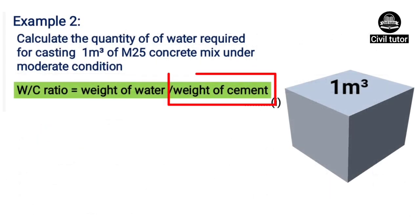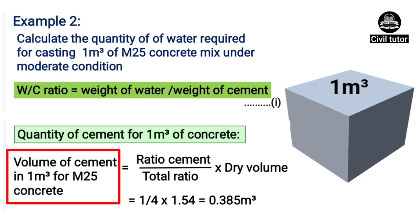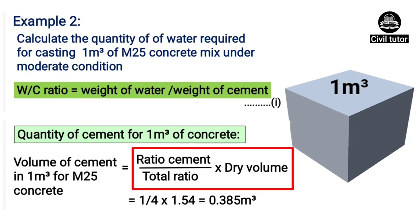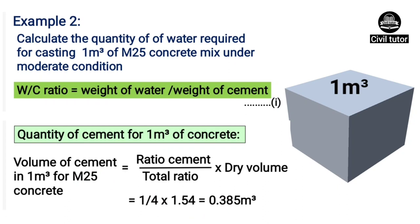Now we need to calculate the weight of cement. To do that, we must know the volume of cement required for the given volume of concrete. Volume of cement in 1 meter cube of concrete will be equal to the ratio of cement upon total ratio, multiplied by the dry volume. For M25 grade of concrete, the mix ratio is 1:1:2, meaning one part cement, one part sand, and two parts aggregate. The ratio of cement is 1, the total ratio is 1+1+2 = 4, and the dry volume of 1 meter cube of concrete is 1.54 meter cube. So on substituting these values, the volume of cement equals 0.385 meter cube.